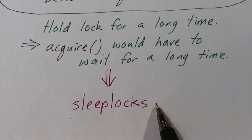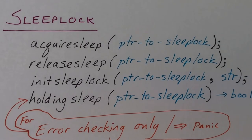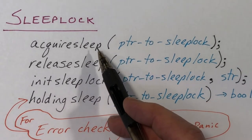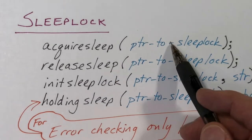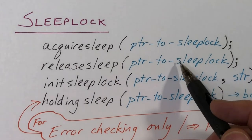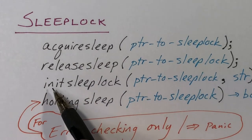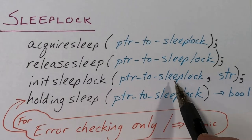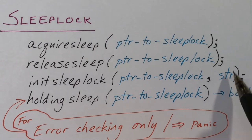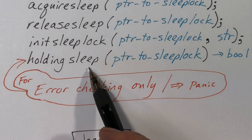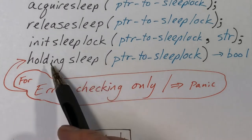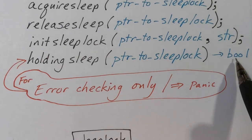Instead, we have sleep locks. Sleep locks are very similar to spin locks in that they have an acquire and release function. However, you get to hold the lock while you go to sleep. In the XV6 implementation, the acquire function is called acquire_sleep, with a corresponding release_sleep. Both are passed a pointer to a structure representing the sleep lock. There's also a function called init_sleep_lock to initialize the structure. Each structure carries a name field, initialized and never changed, which can be used for debugging. There's also a function called holding_sleep to check whether the current process is holding a given lock, returning true if so.